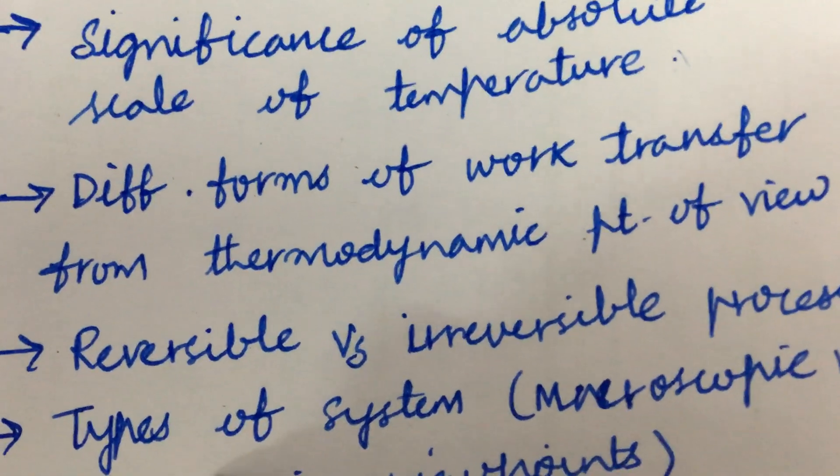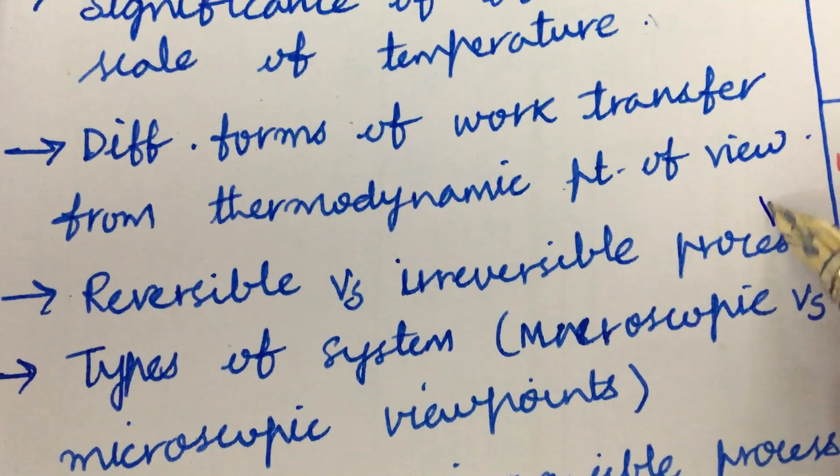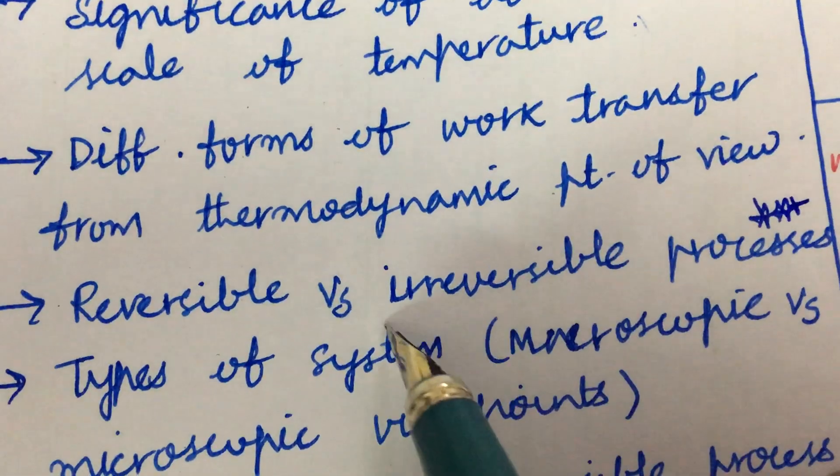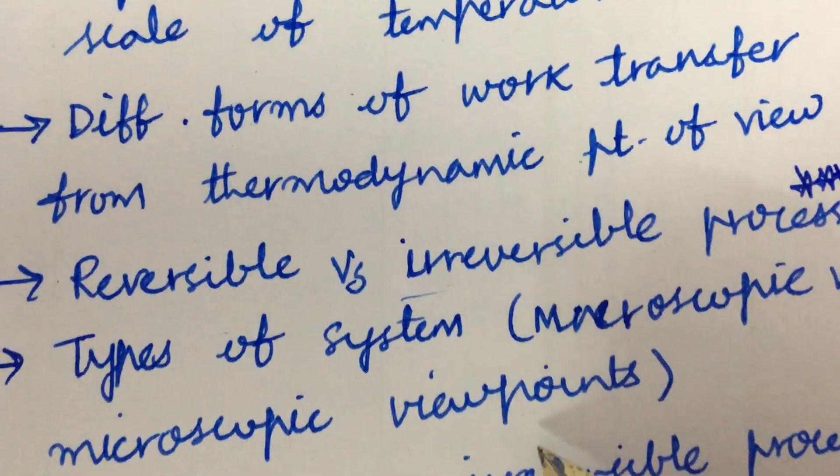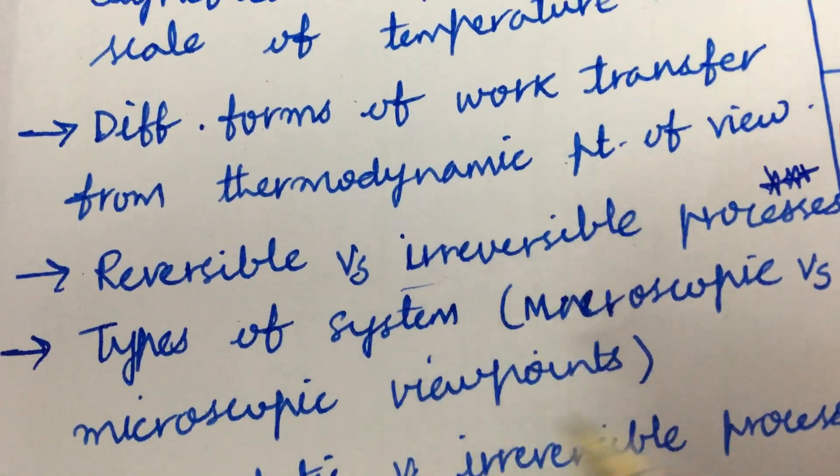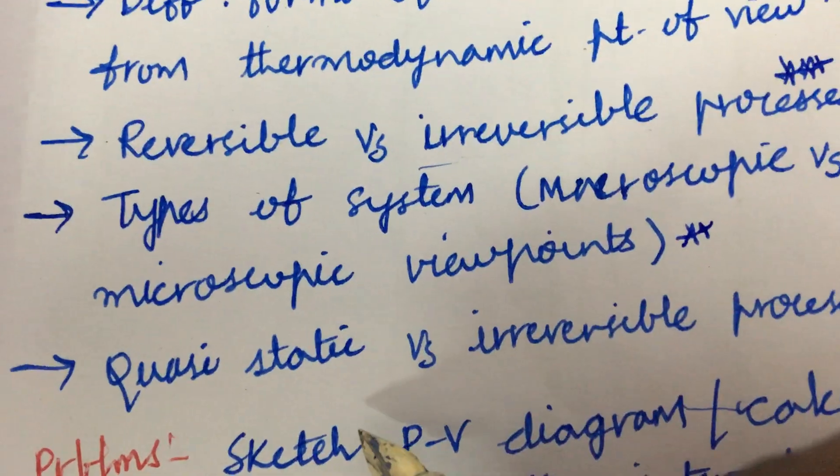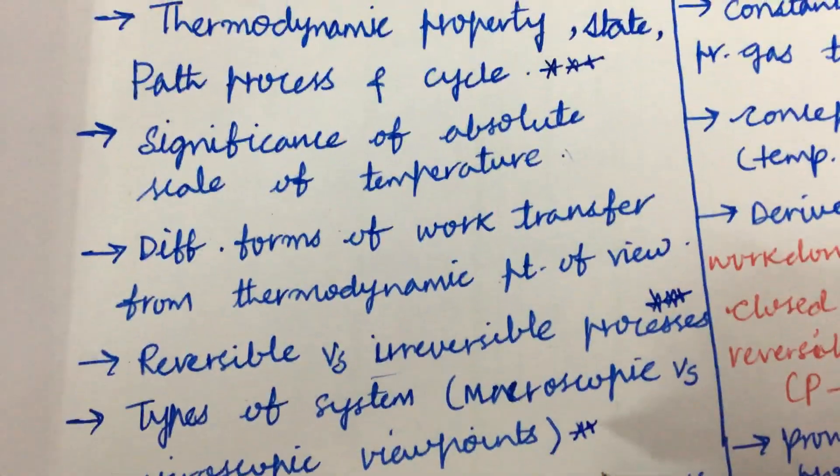And the differences between reversible and irreversible process is very important. Related to irreversible they will be asking you certain derivations also. And the types of system, the macroscopic and microscopic viewpoints and their differences, and the quasi static and irreversible process.